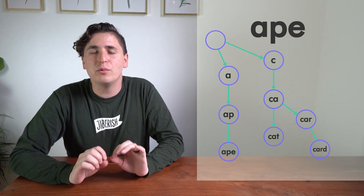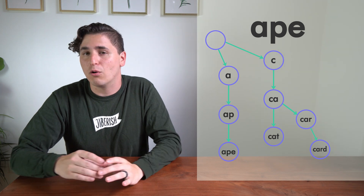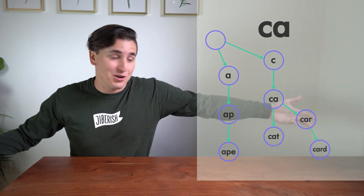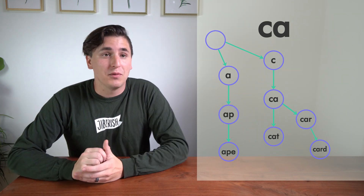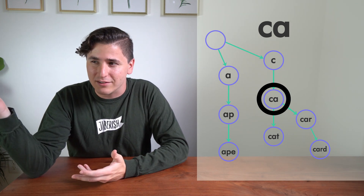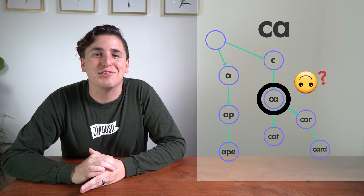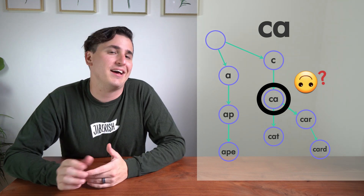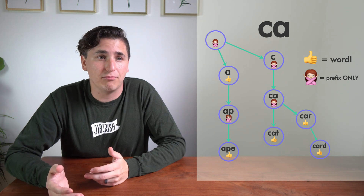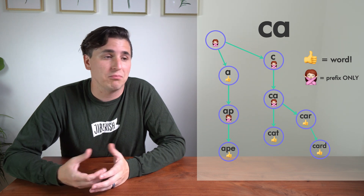Another tricky thing: how do we distinguish between prefixes that are full words on their own and those that are not? For example, if we search for 'ca' — which unless you're in Boston is not a word — we work through to the 'ca' node without falling out of the tree. By our earlier logic, it would appear to be a word, but it's not. So we add a tiny flag to each node indicating whether or not it represents a full word. We're in full control of the data in these nodes, so this doesn't cost much.